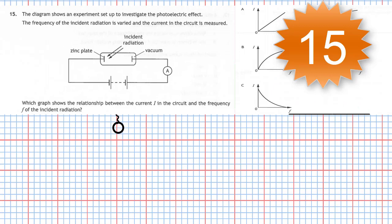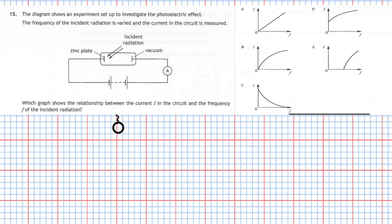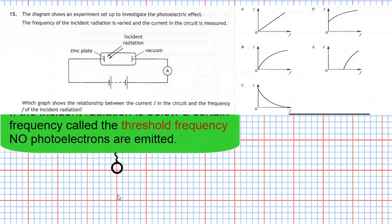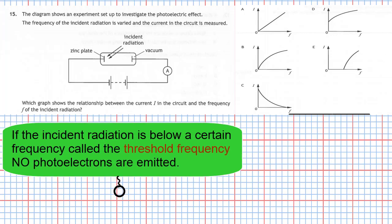Question 15 from section 1 of the 2019 Higher Physics Examination. The diagram shows an experiment set up to investigate the photoelectric effect. The frequency of the incident radiation is varied and the current in the circuit is measured. Which graph shows the relationship between current I and frequency F? The key factor to remember is that for a particular metal, if the incident radiation is below a certain frequency — called the threshold frequency — no photoelectrons are emitted.